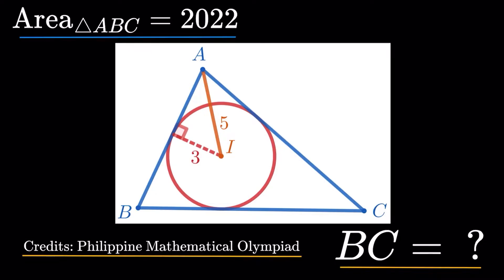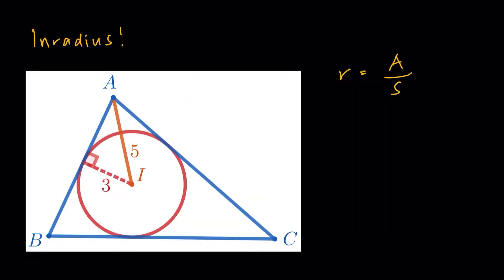Now, just taking a look at the given, we do have an area, and we already have the inradius, or the radius of the inscribed circle. Now, we do have a nice formula for the inradius, right? We do have the inradius r to be the area of the triangle divided by the semi-perimeter of the triangle. So we could use that to our advantage. Now, before we do that though,